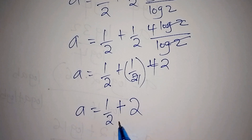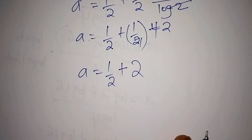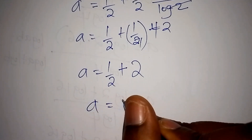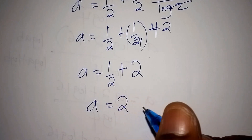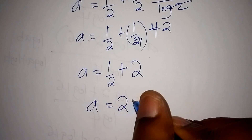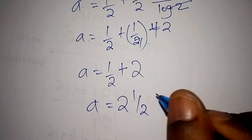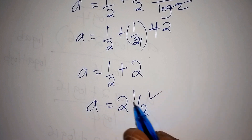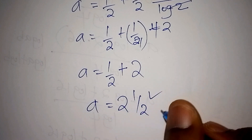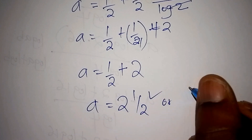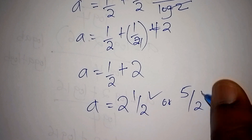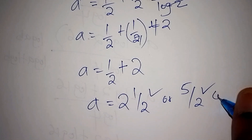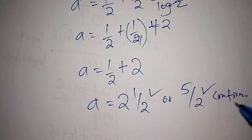So here now we shall see that our correct answer is a is equals to 2, the whole number plus a half. This one is the correct answer. We can change it as a mixed number, or we can have 5 over 2. This is also correct. We can still confirm it and check if it is the true answer.